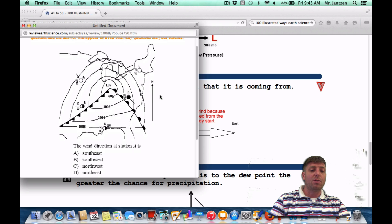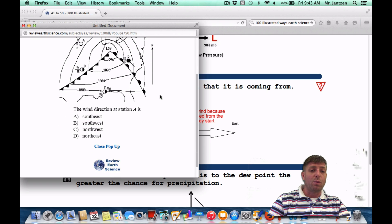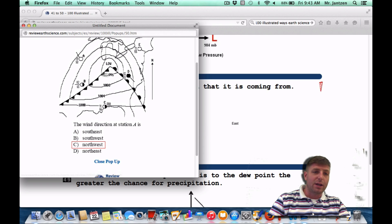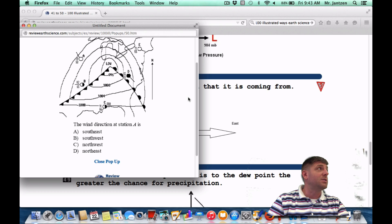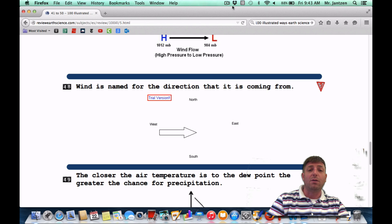Here's a region's question. It says the wind at station A is what? So the wind at station A, here's station A, right over there. So it's kind of basically pointing towards the northwest there. And that's where the wind is coming from. So we're going to call this a northwesterly or choice C.